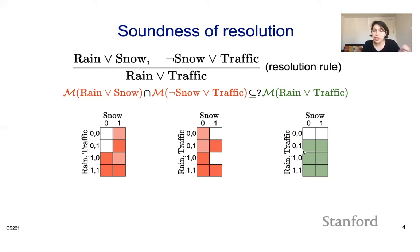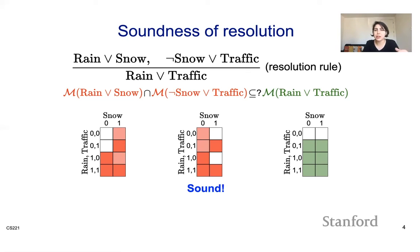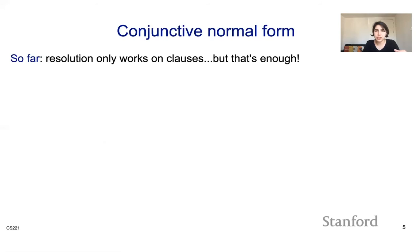The green area represents models of rain or traffic. The question is: is the dark red area a subset of the green area? In this case, it is. So it turns out that resolution is actually sound — in terms of semantics, we are ensuring we get truth by applying resolution.